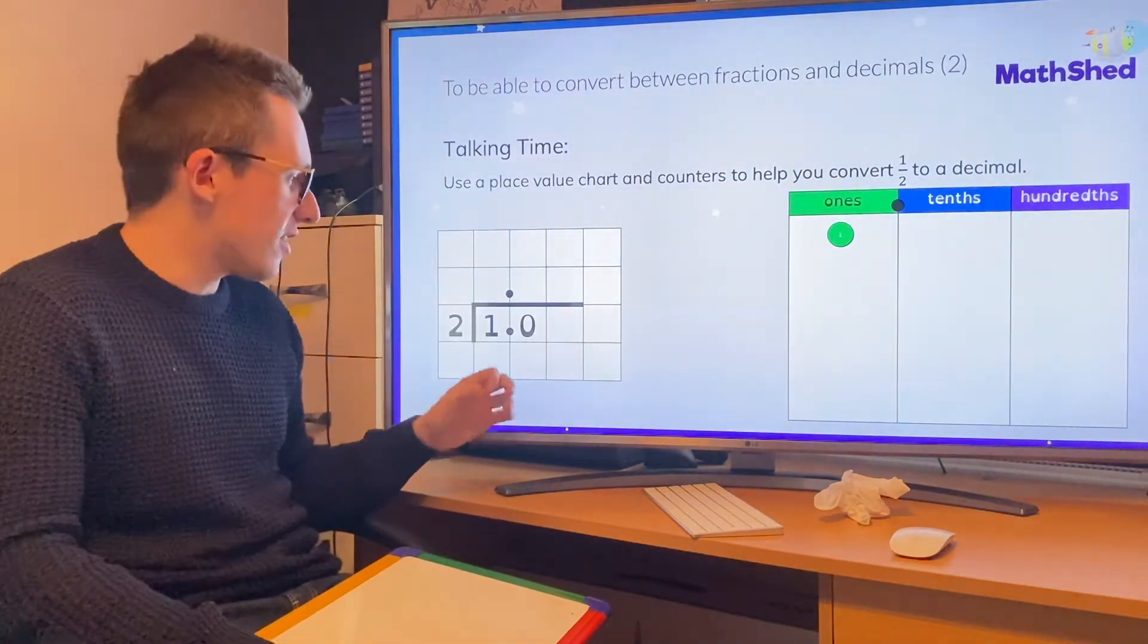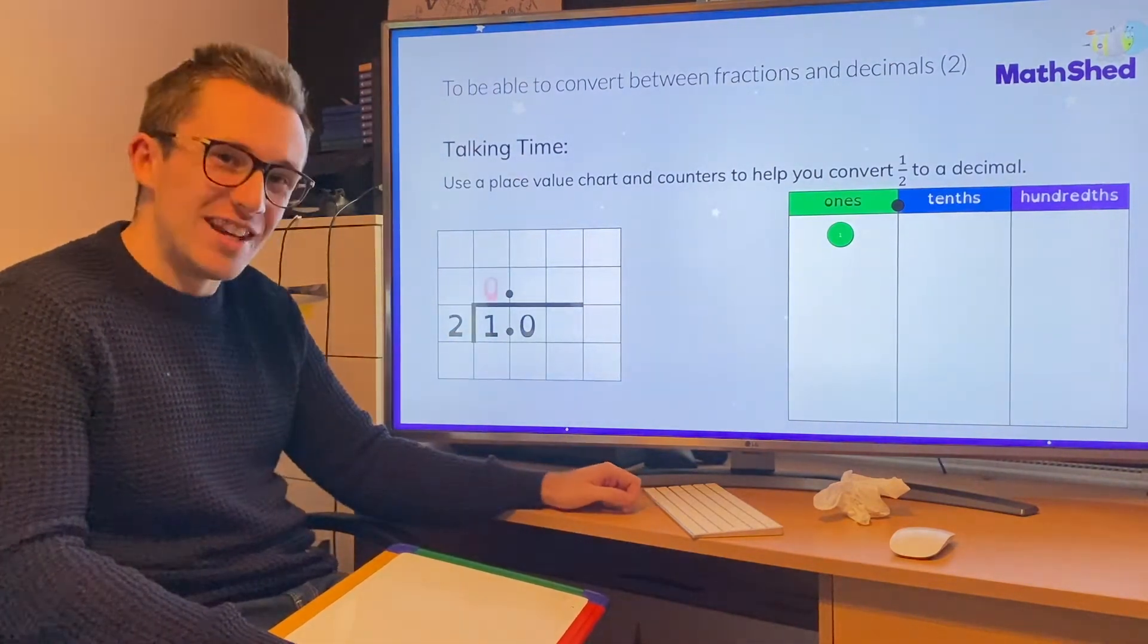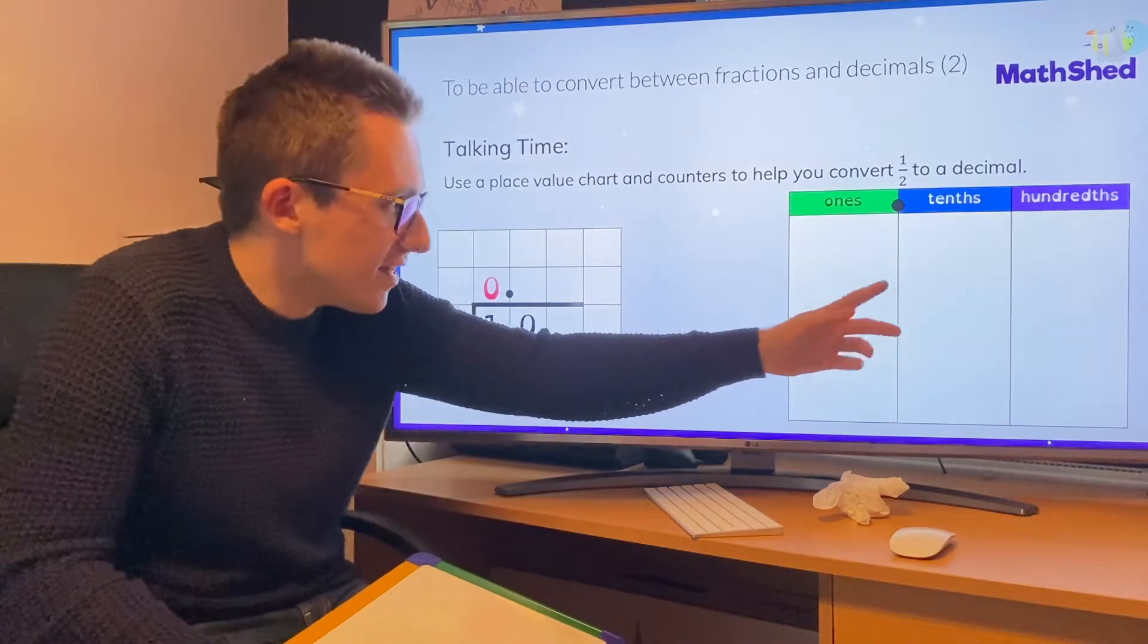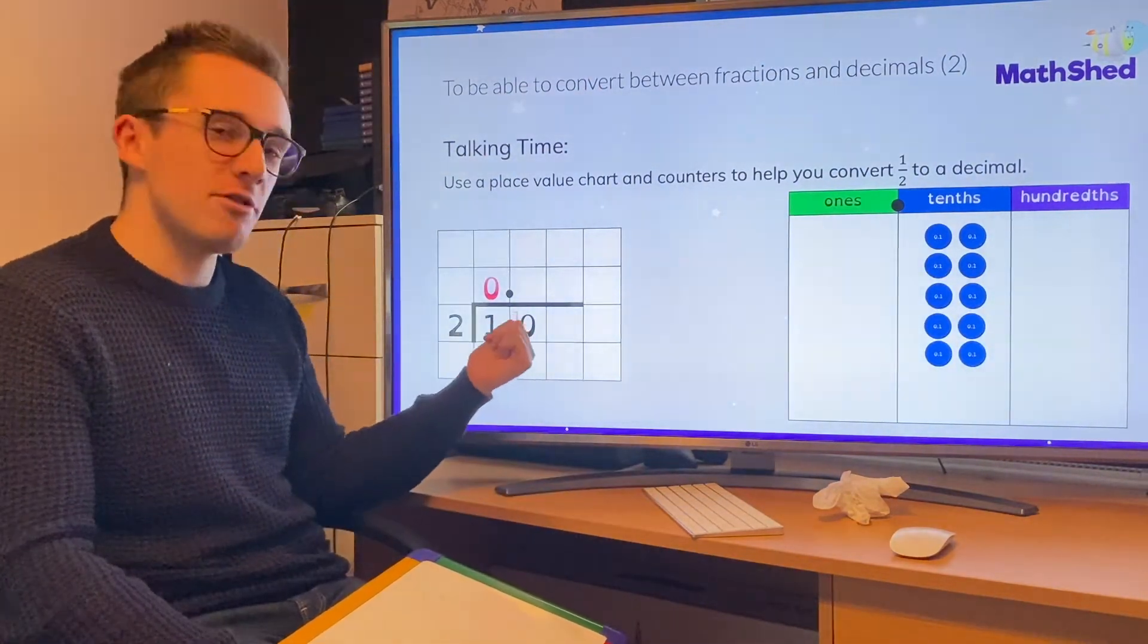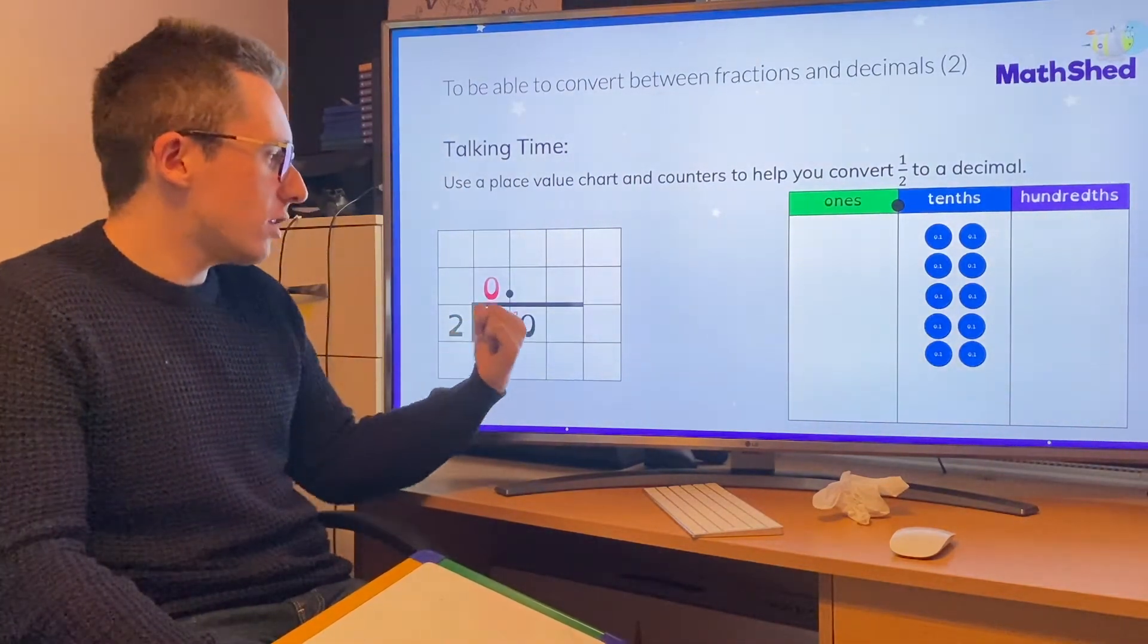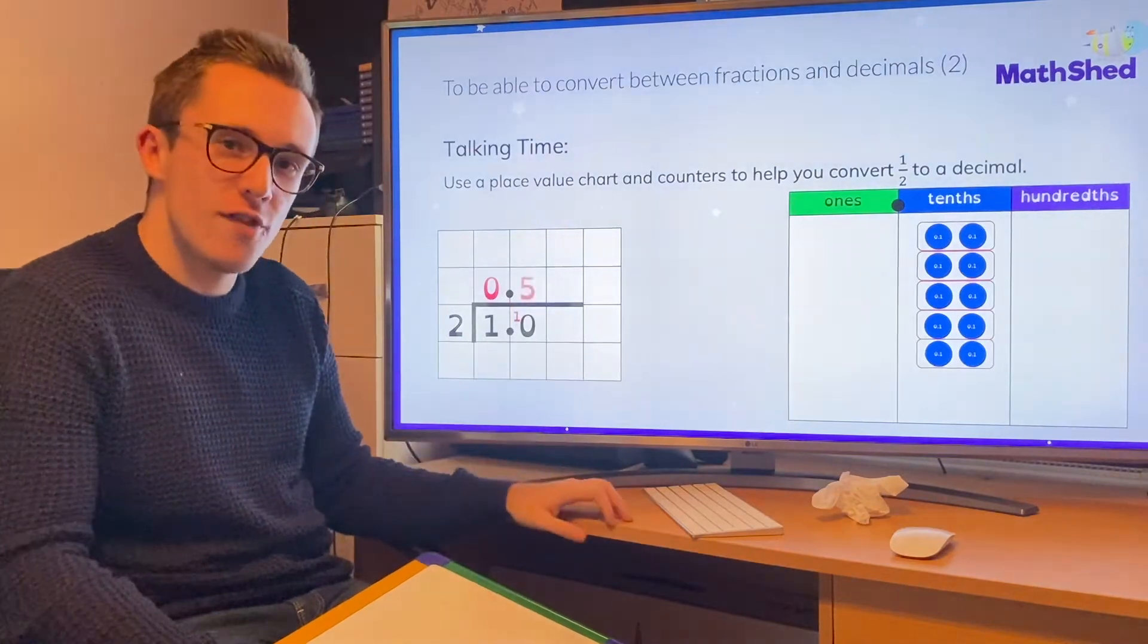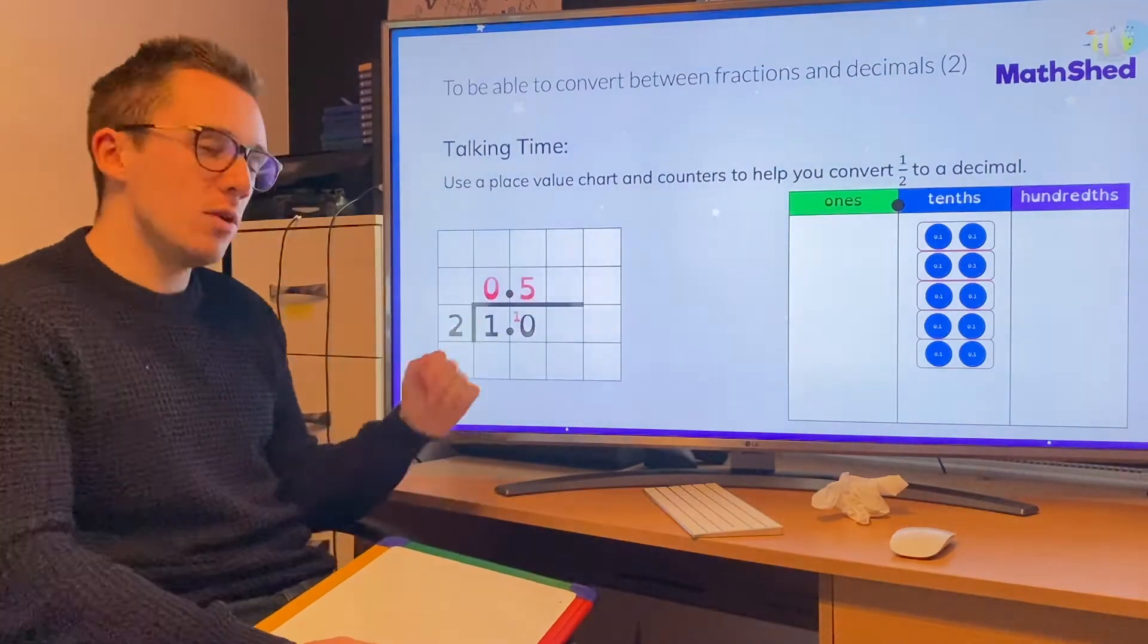So I take two, and I ask myself, how many twos go into one? Well, they don't. So what I'm going to do instead is I'm going to take that one and I'm going to turn it into tenths. I show that one here by carrying the one over. Now I ask myself, how many twos go into ten? Five groups. The answer is five. So the decimal is 0.5. One half is equal to 0.5.